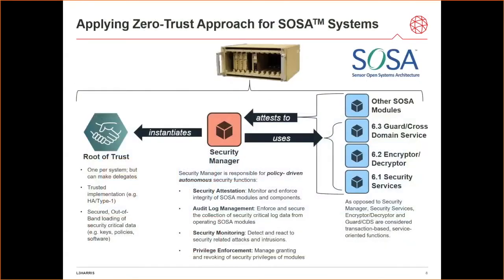The core of the zero-trust security approach is the instantiation of its root of trust. The root of trust is the most secure part of the system. There will be a single root of trust per system, but delegates can be made to improve resiliency. Depending on the criticality of the system, the root of trust should be implemented in highly secure and trusted hardware, like a high assurance or type 1 platform. Security-critical data such as keys and policy should be securely provided out of band. There isn't yet an official module allocation in the SOSA standard for root of trust, so I'm calling this the security manager.